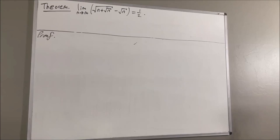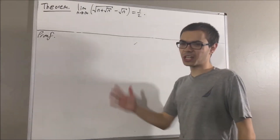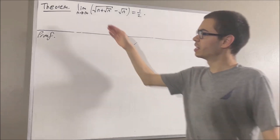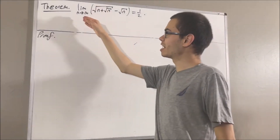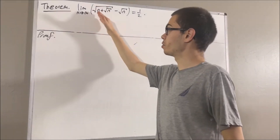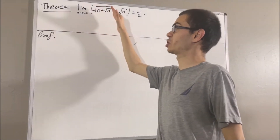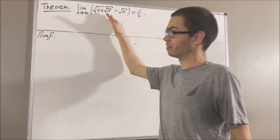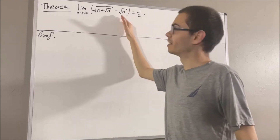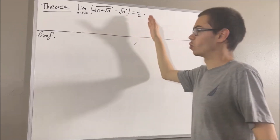Hello! In this video, we are going to prove the following theorem: the limit as n approaches infinity of the square root of n plus the square root of n, minus the square root of n, is equal to one-half.